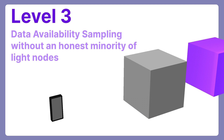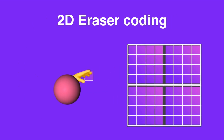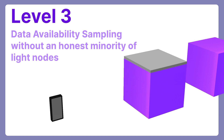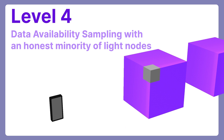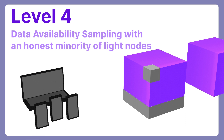This is where Celestia's modular blockchain introduces data availability sampling light nodes. Essentially, light nodes — instead of downloading the whole block to verify data availability — can sample small portions of a block and have high probabilities of that block being available. At Level 3, you don't have an honest minority of light nodes, so although you can detect that there is no data availability, there's not much you can do about it. Level 4: data availability sampling with an honest minority of light nodes. Similar to Level 3, but with an honest minority, you and other light nodes and full nodes can come together to reconstruct the block if an adversarial block producer is withholding data.